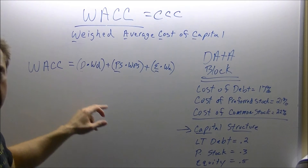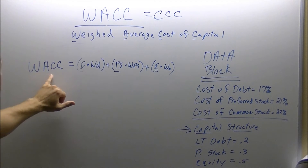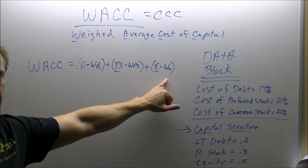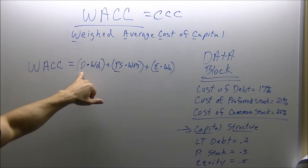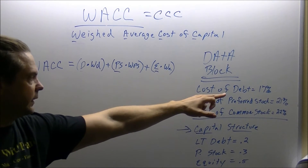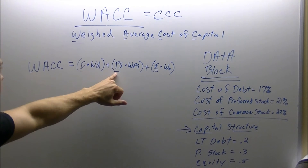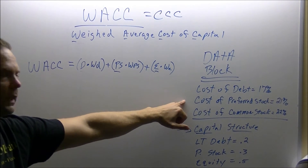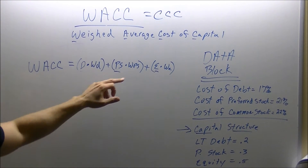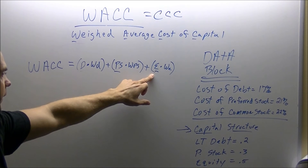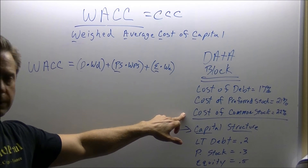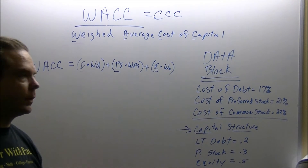In order to calculate the weighted average cost of capital, we are going to use a specific formula. The components of the formula are as follows: D is going to be our cost of debt, which is 17%; PS, which is our preferred stock, and the cost of the preferred stock is 21%; and we are also going to use E, which is our cost of stock, or also cost of equity, and that is 22%.